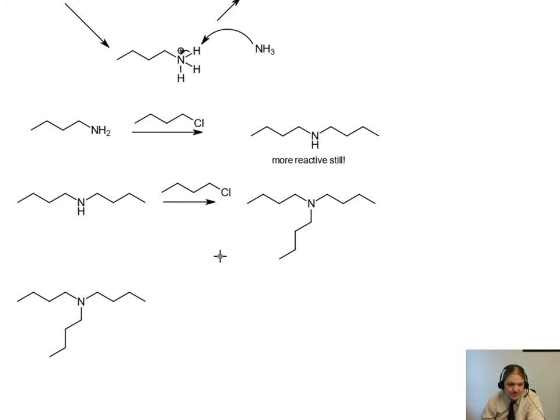Because three alkyl groups still makes a better nucleophile than two. And tributylamine is still reactive as a nucleophile and can continue to react with equivalents of chlorobutane if they're there.